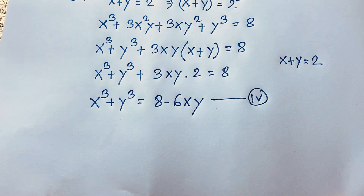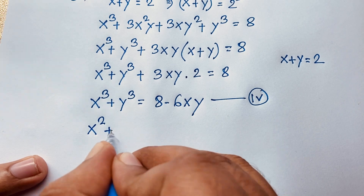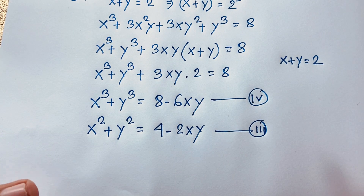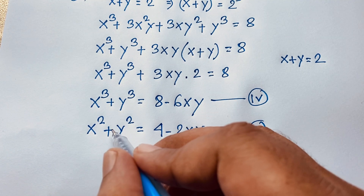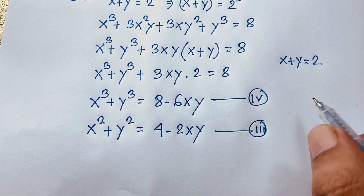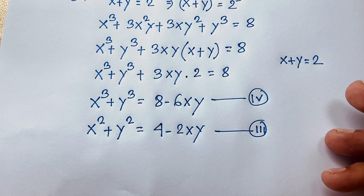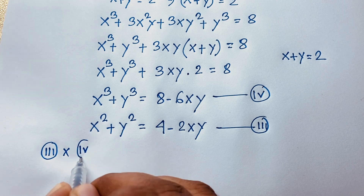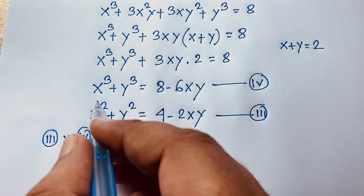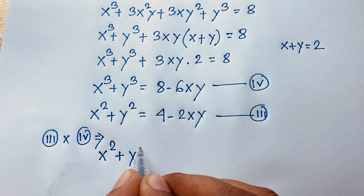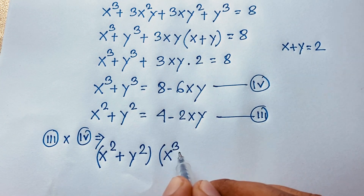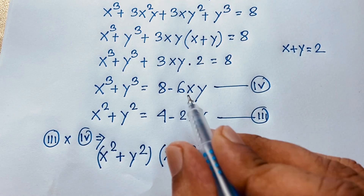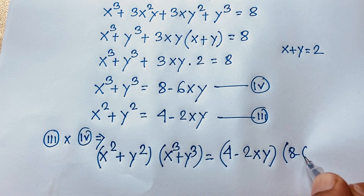Now I multiply our third equation and fourth equation, because we need x to the power 5 and y to the power 5, since our second equation is x⁵ + y⁵ = 82. So (x² + y²)(x³ + y³) equals (4 minus 2xy) times (8 minus 6xy). Expanding the left side gives x⁵ + x²y³ + x³y² + y⁵.